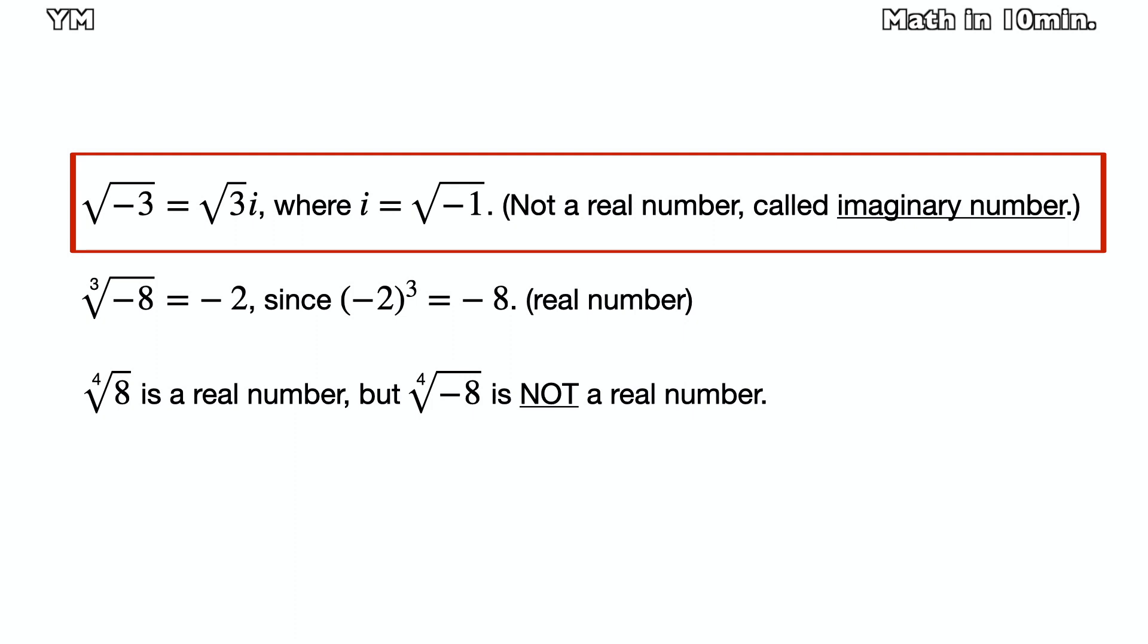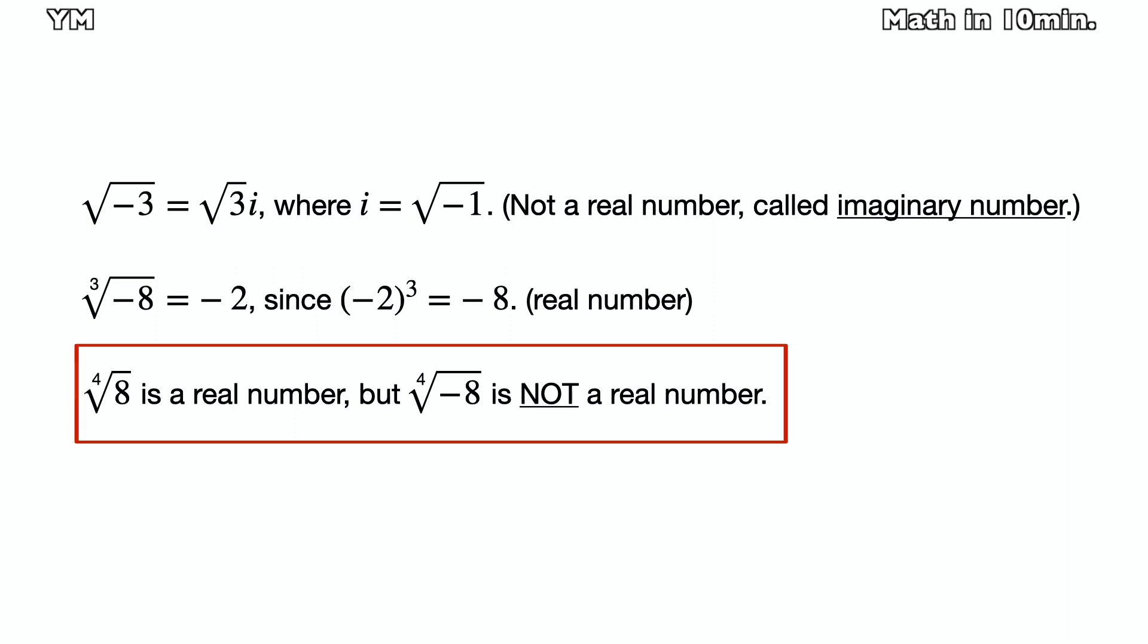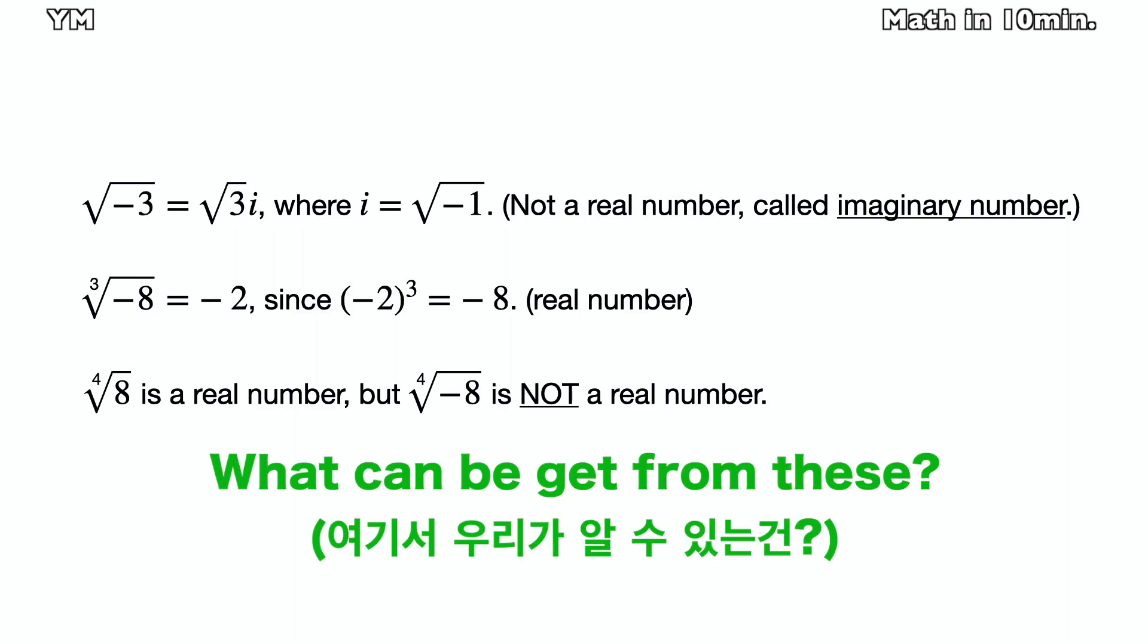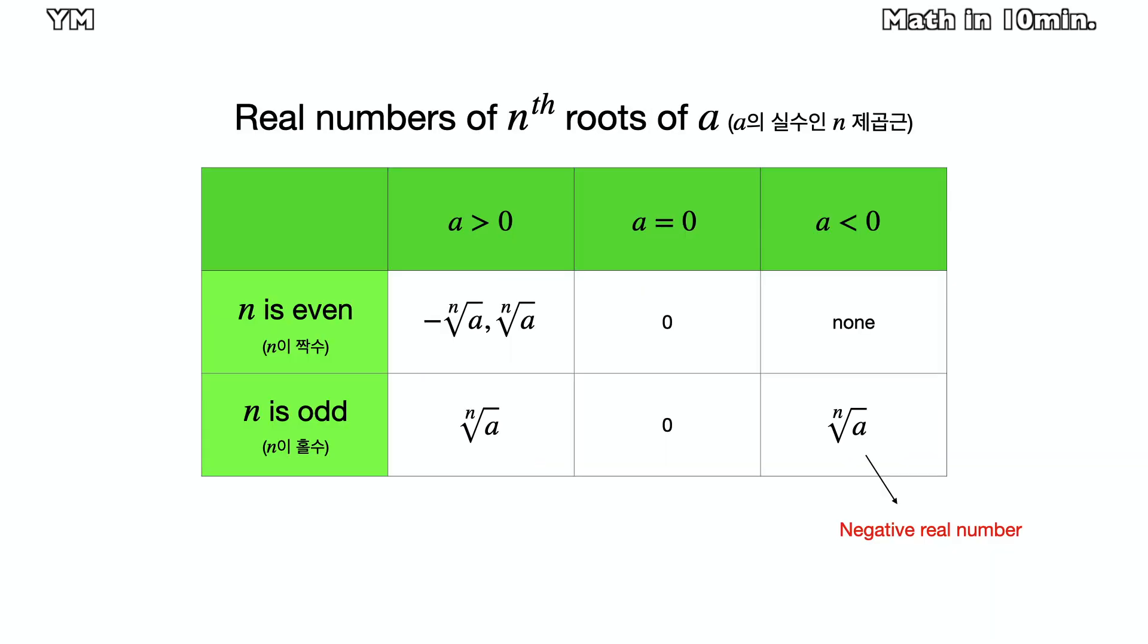Square root of negative 3 is equal to square root of 3 times i, where i is equal to square root of negative 1. These are not real numbers but called imaginary numbers. Cube root of negative 8 is negative 2. Fourth root of a is a real number but fourth root of negative a isn't. When a is a negative real number and m is even, the mth root of a is not a real number.